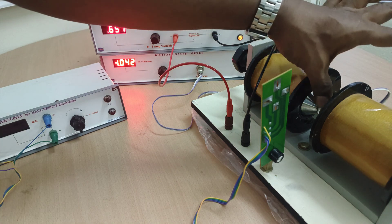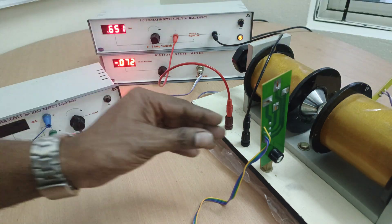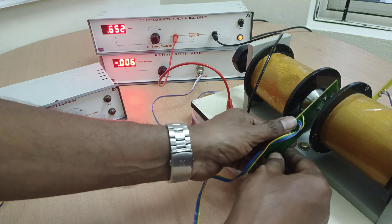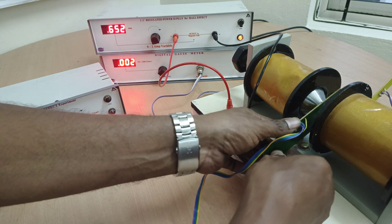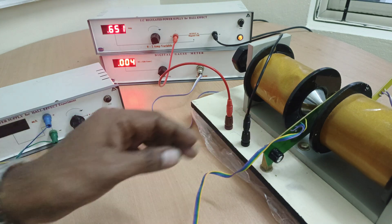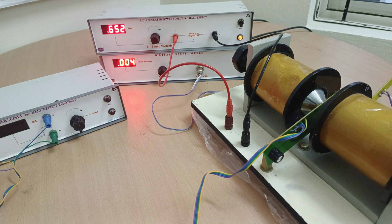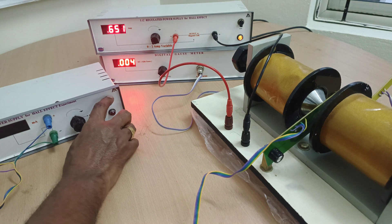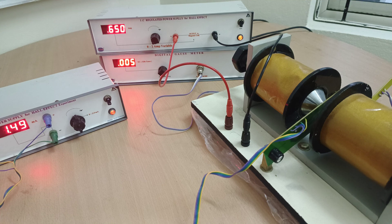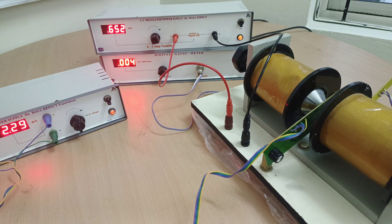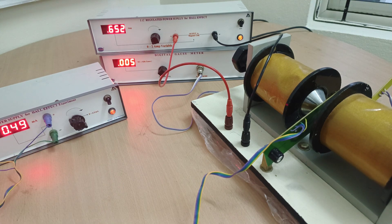After that, remove the gauss probe, now insert Hall probe in between the electromagnets. Now switch on the constant current power supply, make it zero first.